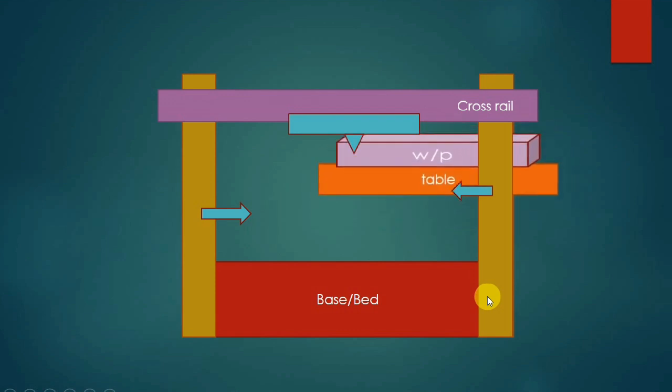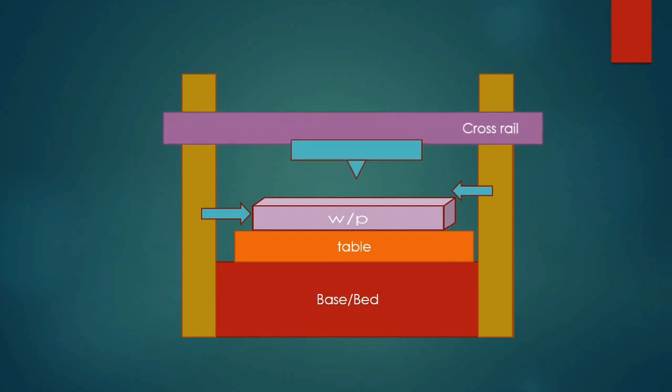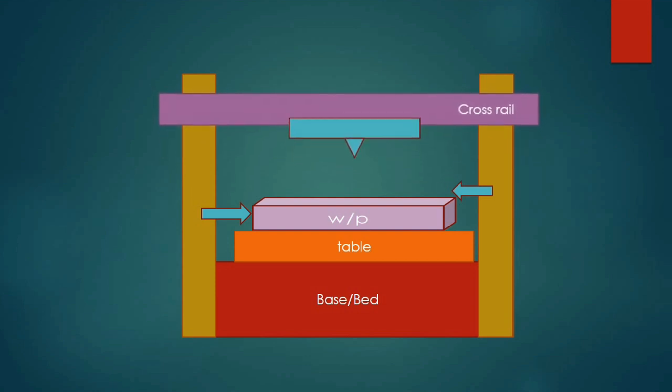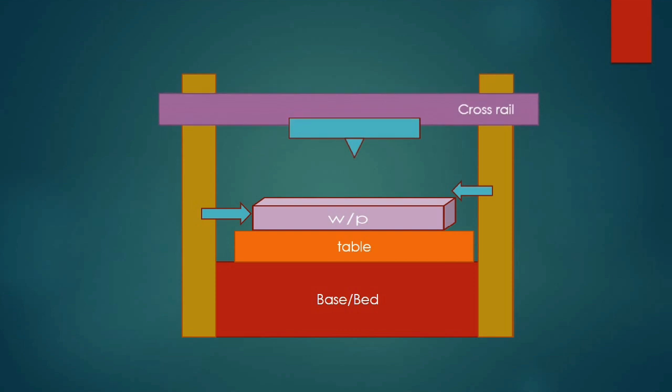If you want to cut from the upper surface of the workpiece, we can apply motion on the cross rail. So there are three machining surfaces, whereas the shaper machine has only one machining surface.